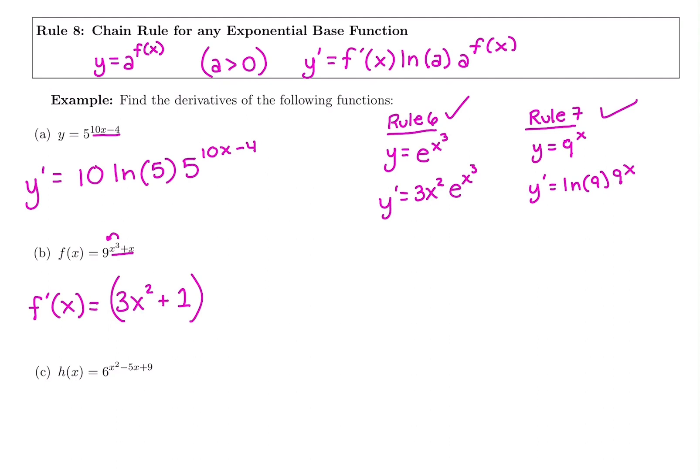So we took the derivative of the power, just like we do for any exponential base. We realize our base is not e, so we need ln of our base, just like rule 7. And then like all exponentials, copy down the original function. So derivative of the power, ln of your base, base to the original power.